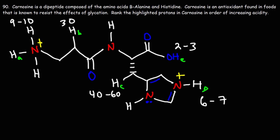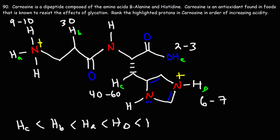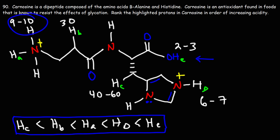With this information we can now rank the acidity of each highlighted proton from least acidic to most acidic. Starting with proton C as the least acidic, then proton B, then proton A, then proton D, and finally proton E as the most acidic. The carboxylic acid proton (E) has the lowest pKa and is most acidic; next is the imidazole proton (D); then the amino proton (A); then the alpha hydrogen next to the amide (B); and finally the carbon proton adjacent to the ring (C) is least acidic.